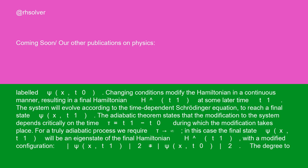The adiabatic theorem states that the modification to the system depends critically on the time tau = T1 − T0 during which the modification takes place. For a truly adiabatic process, we require tau → infinity. In this case, the final state psi(x, T1) will be an eigenstate of the final Hamiltonian H-hat(T1) with a modified configuration; |psi(x, T1)|² is not equal to |psi(x, T0)|².